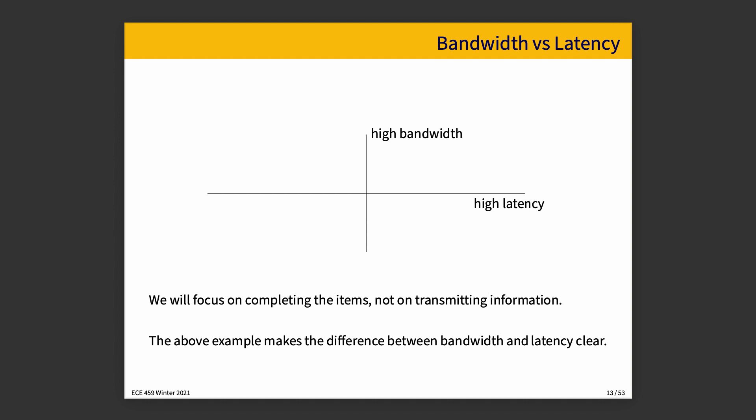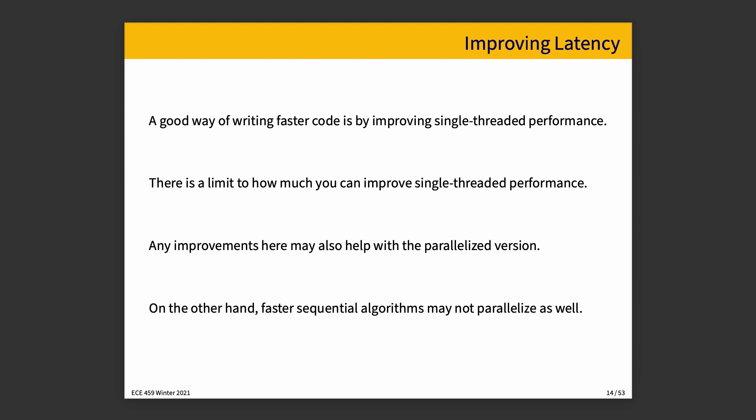So hopefully we now have a good understanding of the difference between bandwidth and latency. We'll talk for just a minute about improving latency. As we get into the first part of the course, we're actually going to focus a lot more on improving bandwidth because parallelization is a very powerful tool, and we'll spend a good amount of time talking about that. For the moment, just a little digression on latency. When improving code, we can start by trying to improve single-thread performance — it might not give us the most benefit, but it might be worth a try. There is a limit to how much you can improve single-thread performance.